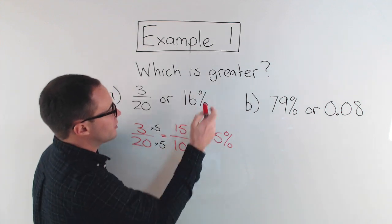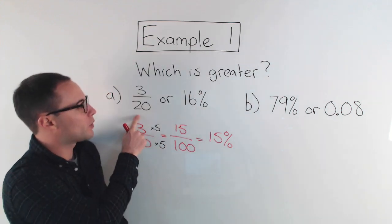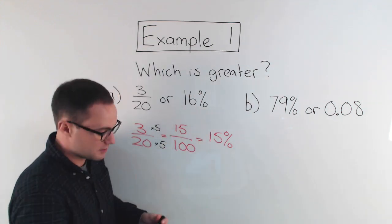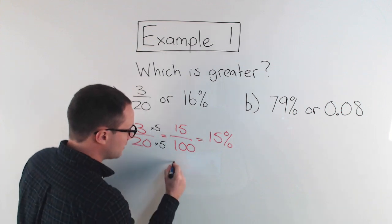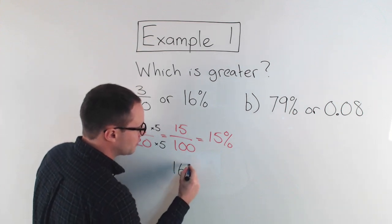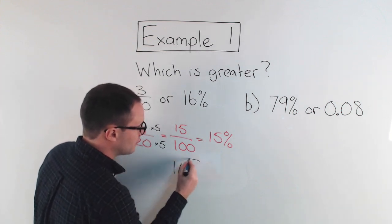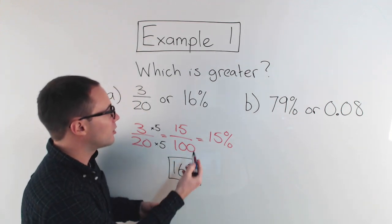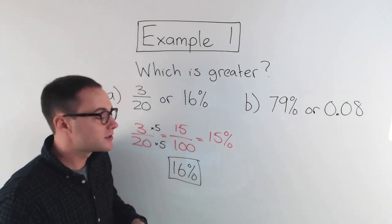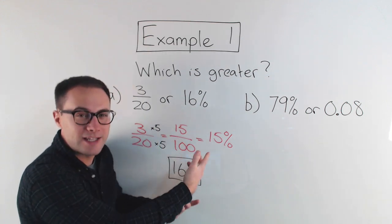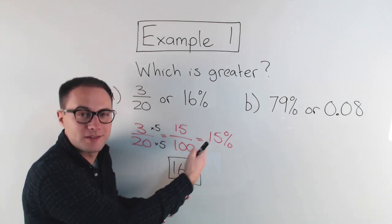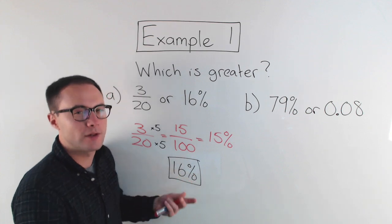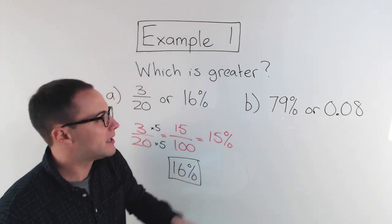So, which is greater? Three-twentieths, which is the same as fifteen percent, or sixteen percent? Sixteen percent is greater than fifteen percent, so it's greater than three-twentieths. See how easy it becomes when they're both percents — then it's really easy to compare.